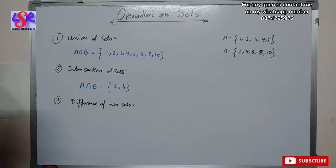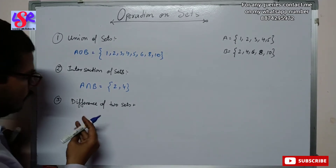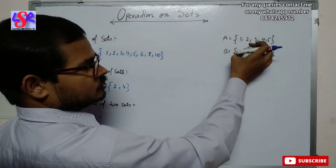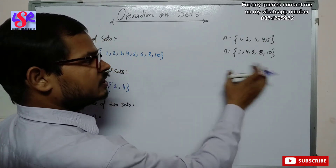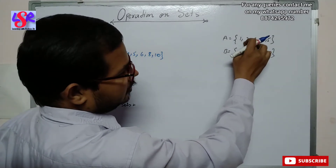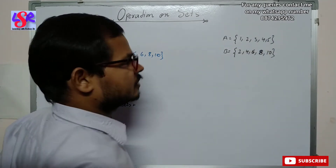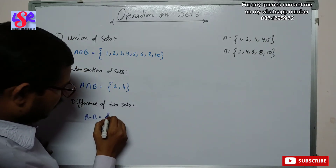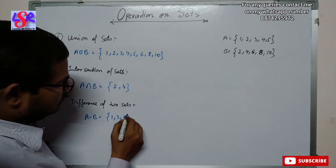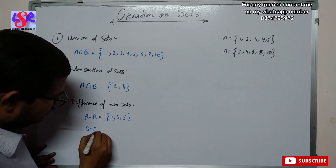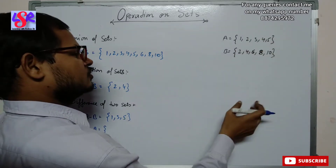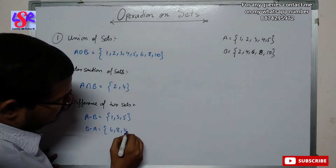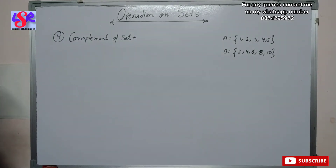Now we have the difference of two sets, which has two parts. A minus B means we take elements of A but do not consider the elements common to both sets — we don't care about elements of B. So we will not take 2 and 4, as they are also present in B. Therefore A minus B = {1, 3, 5}. Similarly, for B minus A, we don't take elements common with A, so B minus A = {6, 8, 10}.